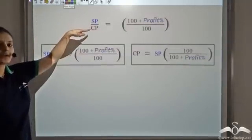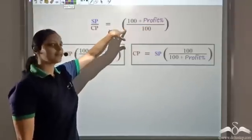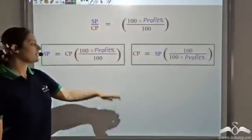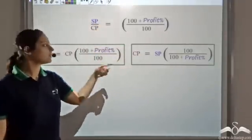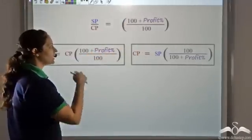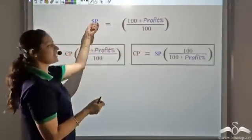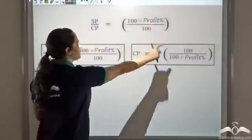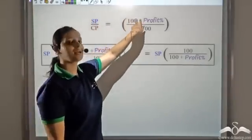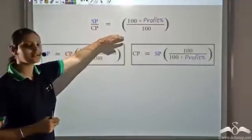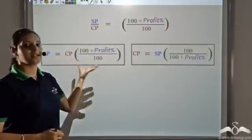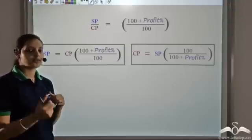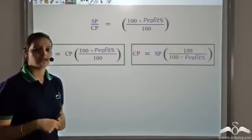So remember that selling price by cost price is (100 plus profit) by 100. If you remember this you can easily find the selling price by cross-multiplying CP, and similarly by reciprocating you can find the cost price. An easy way to remember this: if there is a profit, the selling price would be CP plus profit, so if CP is 100 then SP would be 100 plus profit percent. That's how to remember that SP upon CP equals (100 plus profit) by 100. Knowing either one of the two — cost price or selling price — along with profit percent, you can find the other.